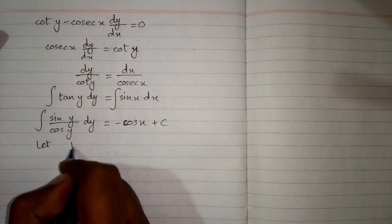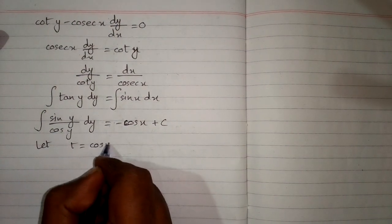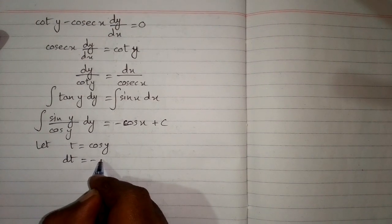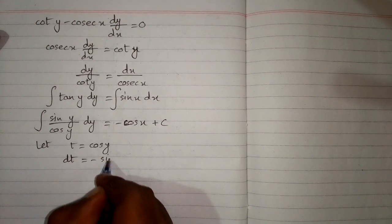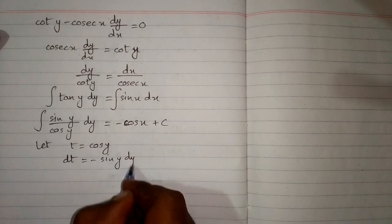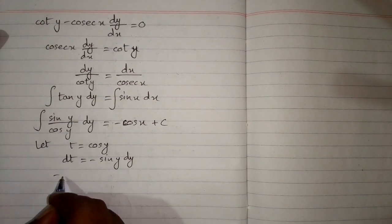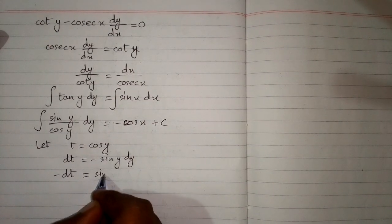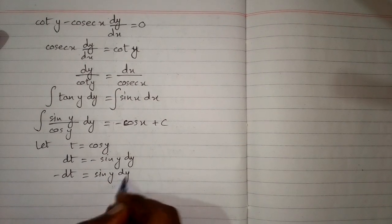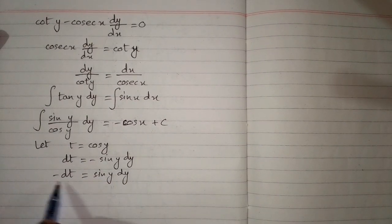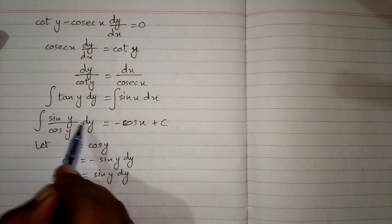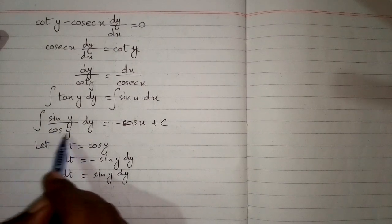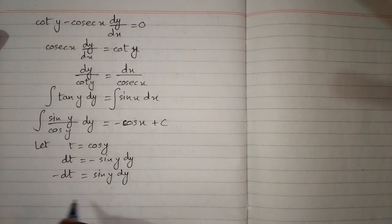Now let t equal cos y, so the differential dt equals sin y dy. This can be written as minus dt equals sin y dy. We substitute minus dt in place of sin y dy in the integral, and t in place of cos y.